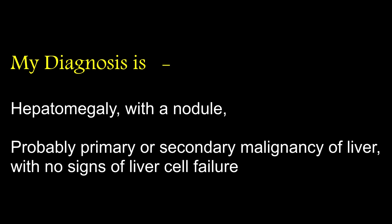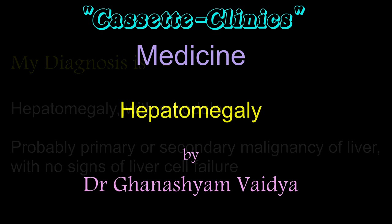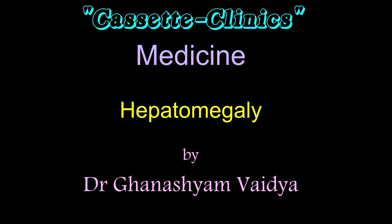How will you confirm the diagnosis? By ultrasonography, CT scan or MRI, laparoscopy, and liver biopsy. What are the predisposing factors for hepatoma? Chronic alcoholism and cirrhosis, Hepatitis B and Hepatitis C, aflatoxins in mushrooms, and hemochromatosis. Which is the tumour marker for hepatoma? Alpha-fetoprotein. This is the end of the discussion on hepatomegaly in the series of case presentations in medicine in the Cassette Clinics by Dr. Ghanashyam Vaidya.